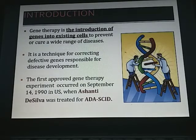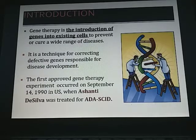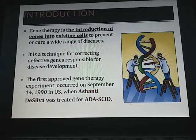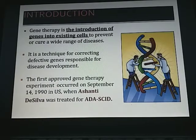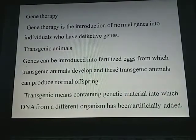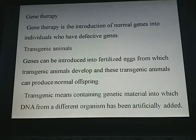The first approved gene therapy experiment occurred on September 14, 1990, in the US, when Ashanti de Silva was treated for adenosine deaminase deficiency — a severe combined immunodeficiency disease. Gene therapy is the introduction of normal genes into individuals who have defective genes.